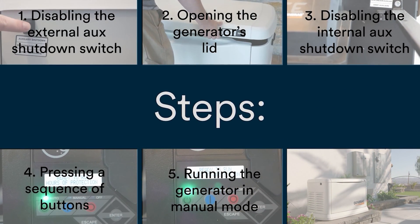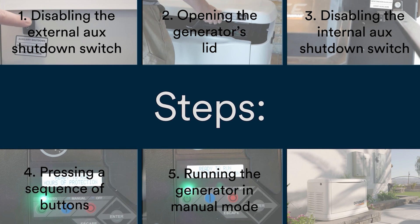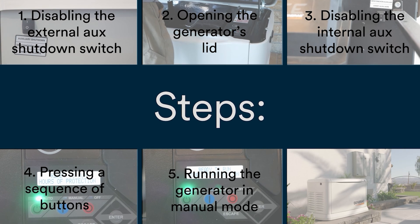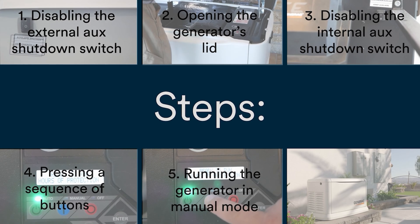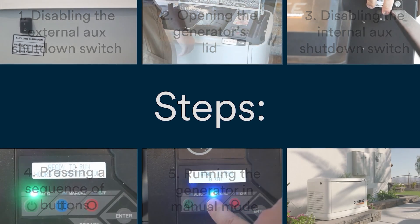The steps include: first, disabling the external auxiliary shutdown switch; opening the generator's lid; disabling the internal auxiliary shutdown switch; pressing a sequence of buttons on the control panel; and lastly, running the generator in manual mode.